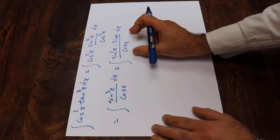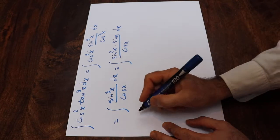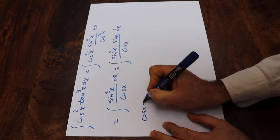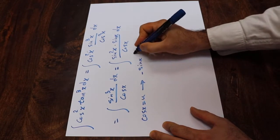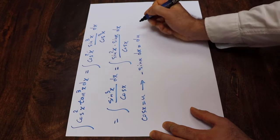So this integral now, you can solve using the substitution rule. If you define cosine x as u, if you take the derivative from each side of this equation, therefore, you can conclude minus sine x dx will be equal to du.